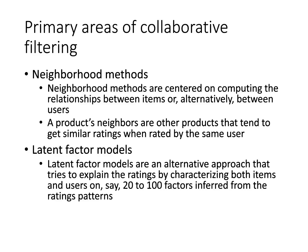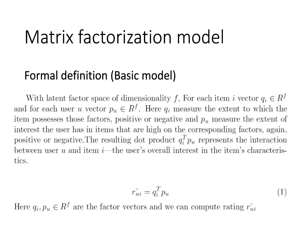Collaborative filtering has two primary areas: neighborhood methods and latent factor models. In neighborhood methods, for example, if you buy a mobile phone, a headphone may be recommended as a neighboring product. In latent factor models, we use 20 to 100 factors based on previous ratings. This paper focuses on latent factor models, proposing the matrix factorization model derived from them.